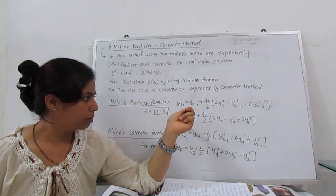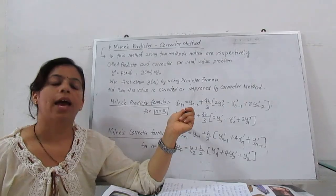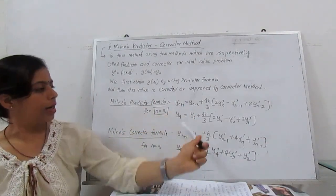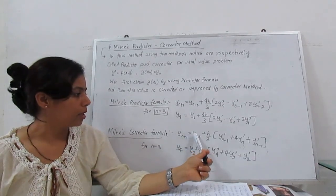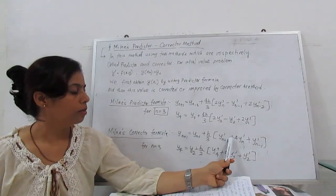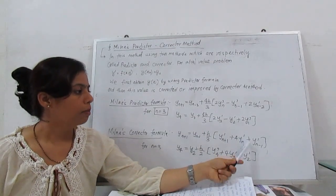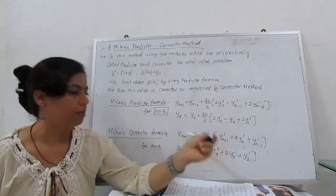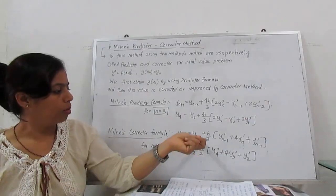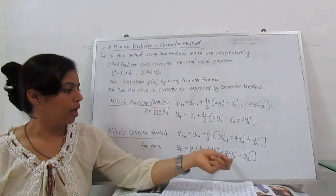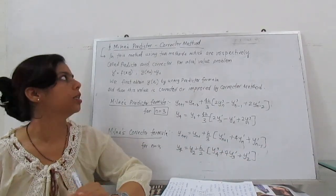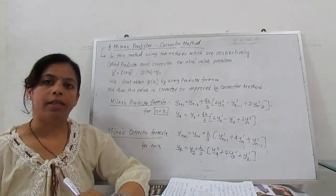Now this y₄ value we improve with the help of corrector formula. The corrector formula in general is yₙ₊₁ = yₙ₋₁ + (h/3)[y'ₙ₊₁ + 4y'ₙ + y'ₙ₋₁]. When we substitute n = 3, we get y₄ = y₂ + (h/3)[y'₄ + 4y'₃ + y'₂]. So this is the Milne predictor and corrector method.